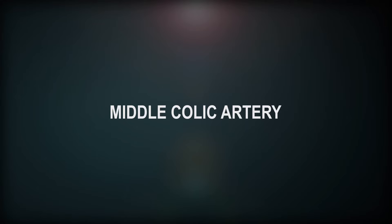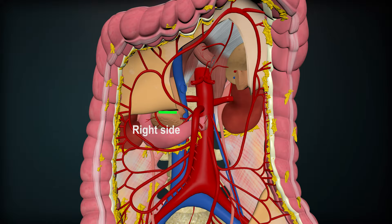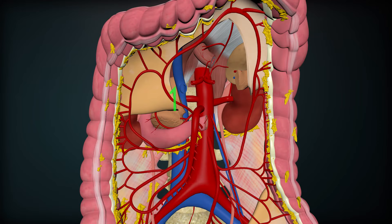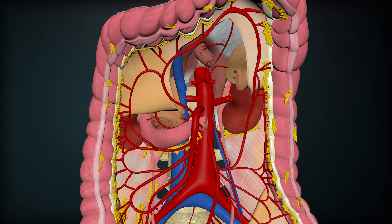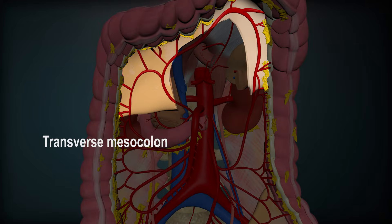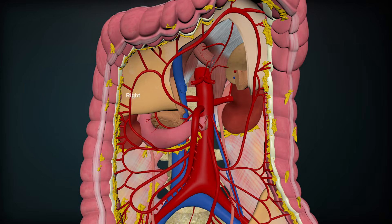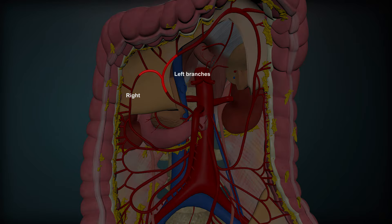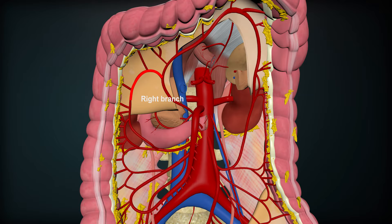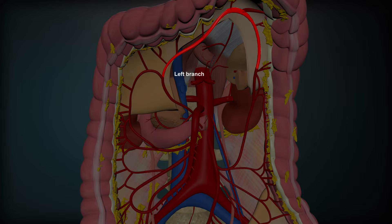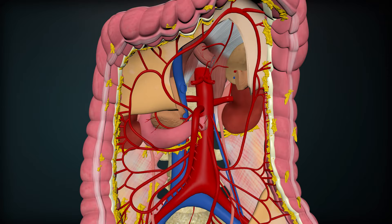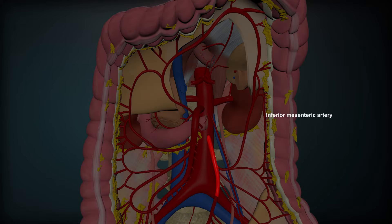Middle Colic Artery: It arises from the right side just below the pancreas and runs upward and forward to pass between the two layers of the transverse mesocolon, where it divides into right and left branches. The right branch anastomoses with the ascending branch of the right colic artery, and the left branch anastomoses with the ascending branch of the left colic artery, a branch of the inferior mesenteric artery.